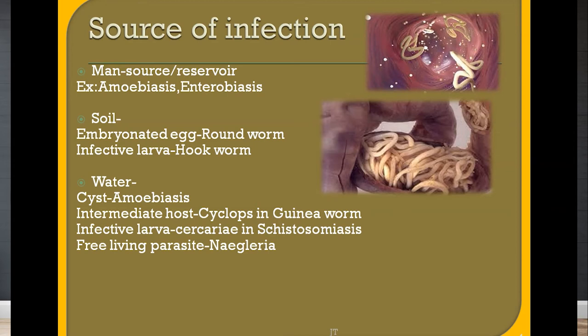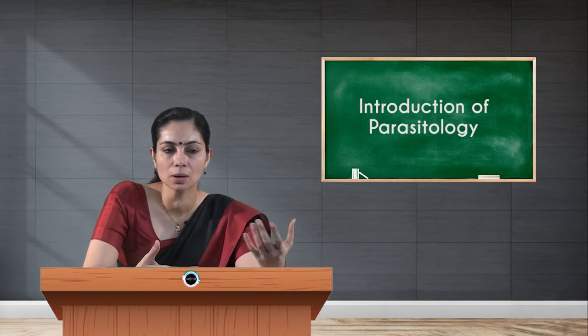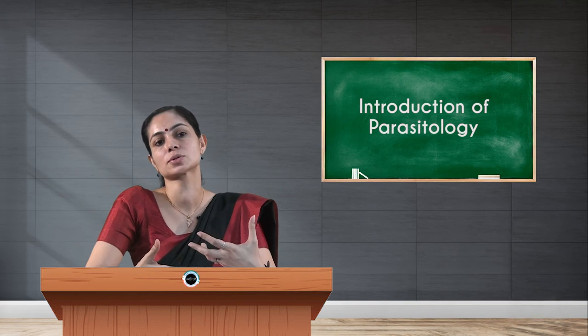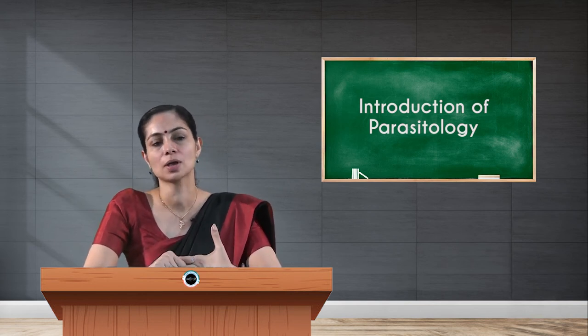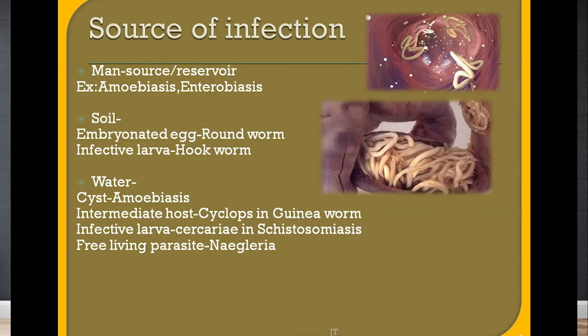Water is a source of infection in many infections — in the form of cysts, intermediate hosts, infective larvae, or free-living parasites. Drinking contaminated water containing the cyst of Entamoeba histolytica causes amoebic infection. In guinea worm infection, Cyclops (the intermediate host) may be present in drinking water. In schistosomiasis, the larval stage called cercariae is present in water and penetrates the skin.